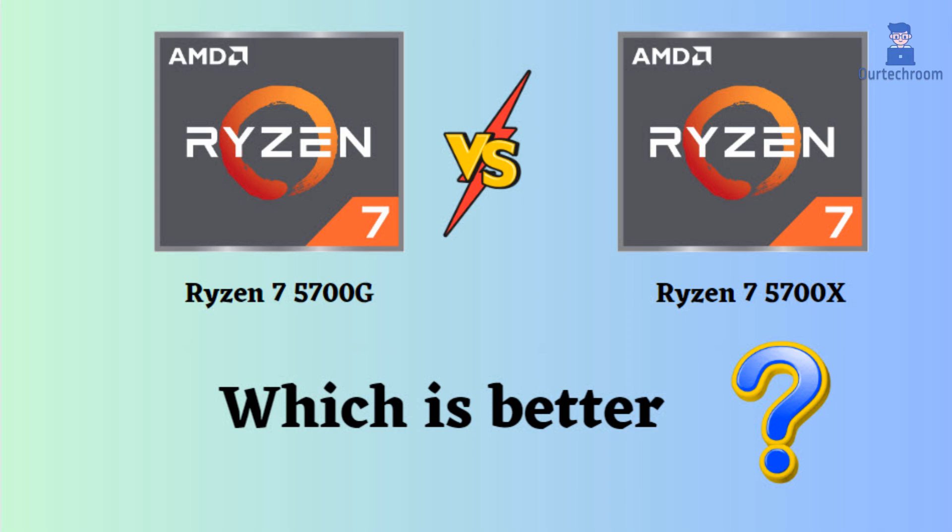In this video, I will be comparing the AMD Ryzen 7 5700G and AMD Ryzen 7 5700X, highlighting their differences, and then presenting a conclusion to assist you in determining the superior choice. Both processors are formidable offerings from AMD's Zen 3 architecture, each possessing its own strengths and weaknesses. Let's delve into them.